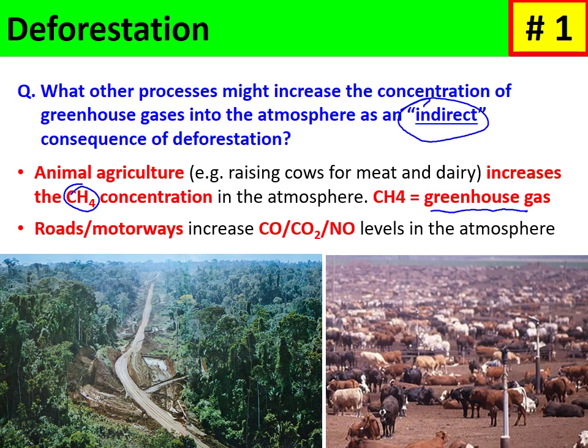If cleared forest land is used for motorways and highways, exhaust fumes from vehicles using those roads release carbon monoxide, carbon dioxide, and nitrous oxide. These are also greenhouse gases, much like methane, and they help reflect infrared light back to the Earth's surface, contributing further to climate change.